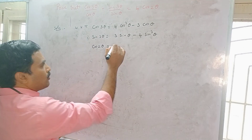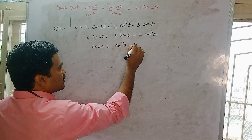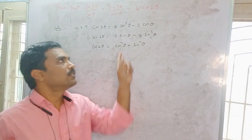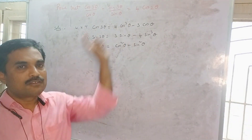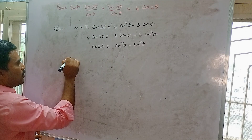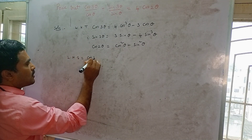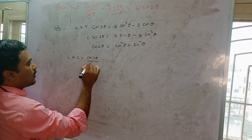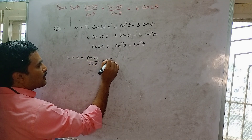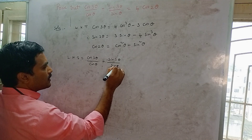cos 2θ = cos²θ − sin²θ. Remember these three formulas to solve this problem. Now we take the left hand side: LHS = cos 3θ / cosθ + sin 3θ / sinθ.